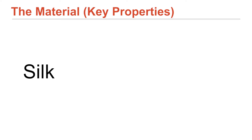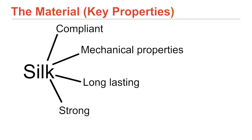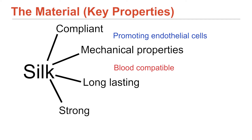For our material, we're going to use silk. We come to silk on the basis that it had to have a collection of properties not available in every polymer. We're looking at it being compliant and having matched mechanical properties to the tissue, but also being long-lasting and strong. Already those two things together narrow the list pretty considerably. Then, promoting endothelial cells while also being blood compatible narrows it even further.